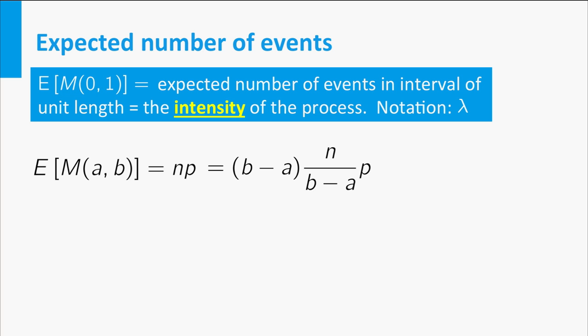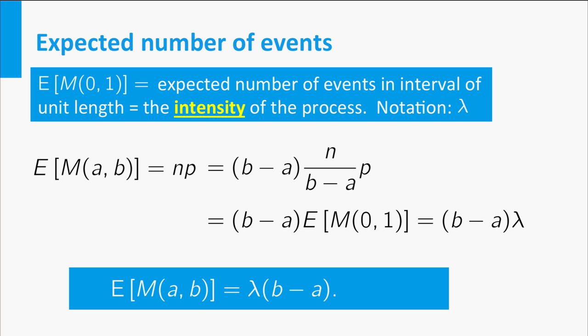Now we can rewrite the expectation of M(a,b) as shown on the slide, and find that the expectation of M(a,b) equals the intensity of the process times the length of the interval (a,b).